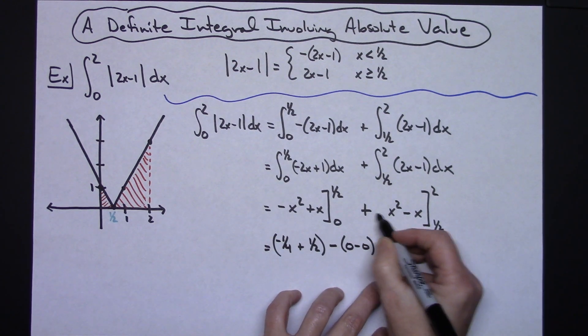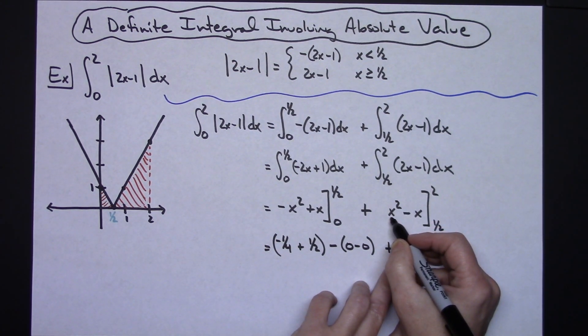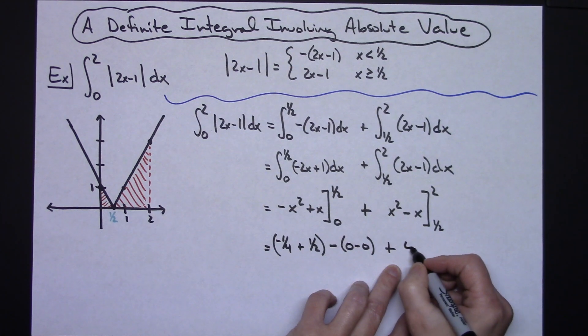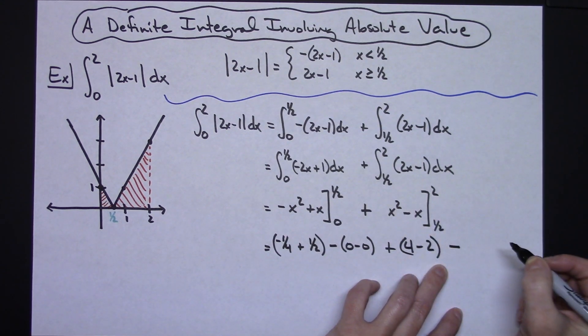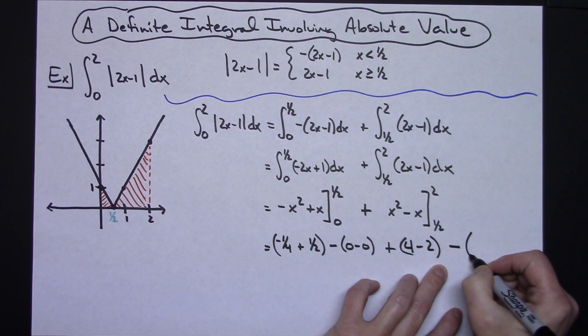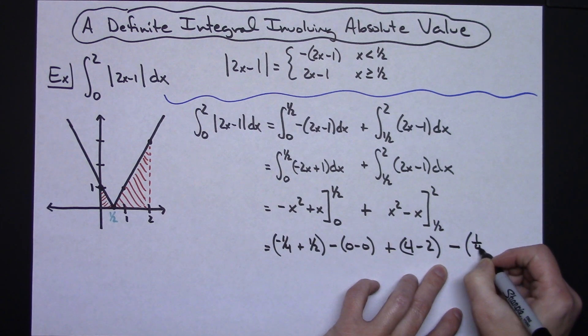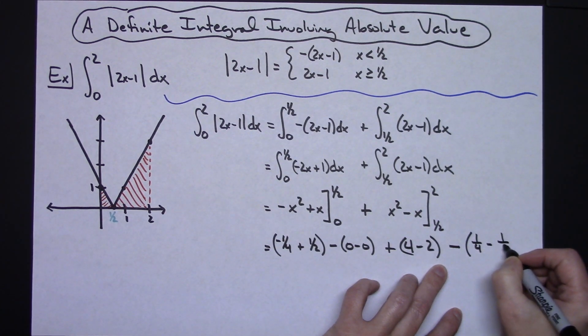Now for this second one I'm going to plug in 2. 2 squared is going to be 4 minus 2 for that and then subtracting what I get when I plug in 1 half so 1 half squared would be 1 fourth minus 1 half.